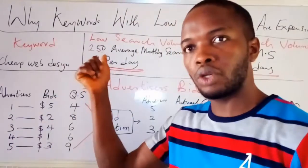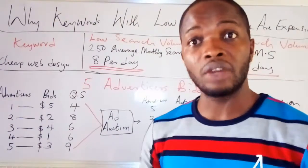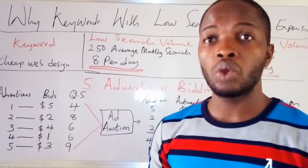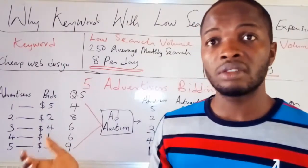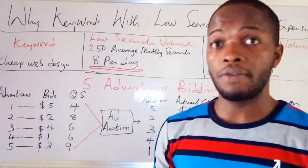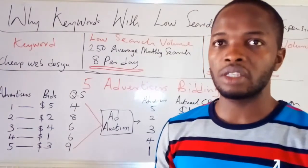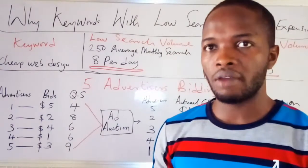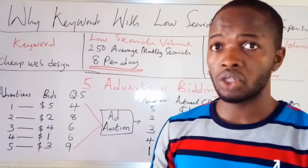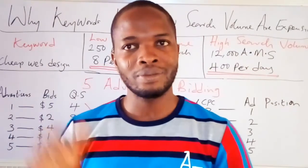With high search volume, everyone is getting clicks, getting customers, and they're happy — so no one is aggressively raising their bids. However, with low search volume, only one advertiser gets clicks while the others get nothing, so they all compete aggressively to get among those eight daily clicks. This competition results in increasing bids, increasing competition, and makes advertising on low search volume keywords very expensive with high cost per click. I believe this addresses some major issues in Google AdWords — feel free to ask questions. Thanks for watching.